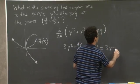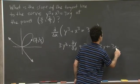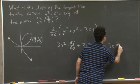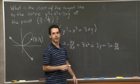Plus, OK, so we take the first times the derivative of the second, which is 3x dy by dx.